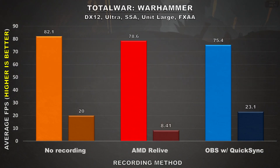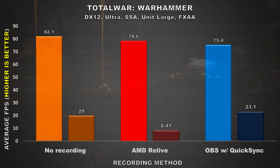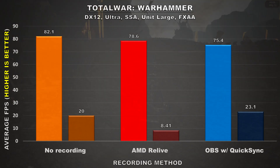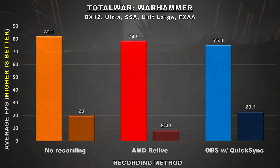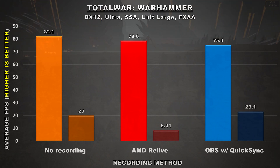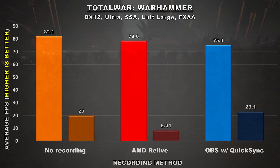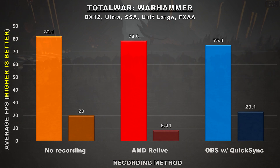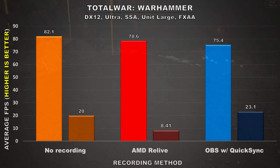The next game is Total War: Warhammer. In regards to the average frame rate, similar performance differences are observed as with the previous titles. What's also interesting here are the minimum frame rates, where OBS actually has the highest of the three, and AMD's Relive shows a more significant impact on minimum frame rate.